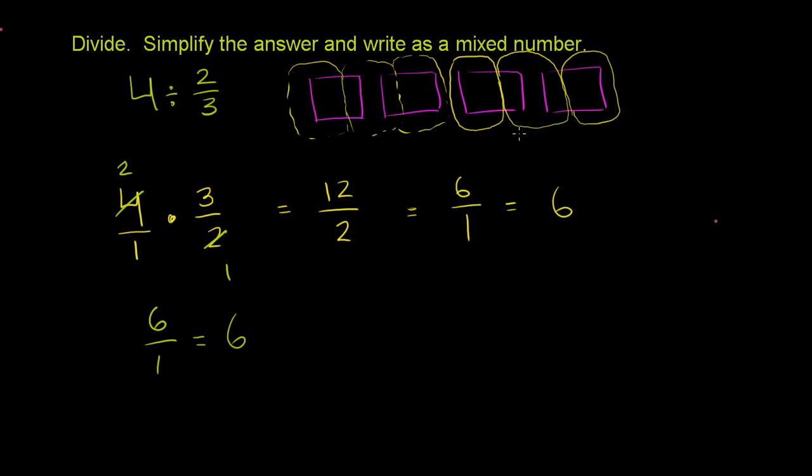Now, how many groups of 2 thirds do we have? We have 1, 2, 3, 4, 5, 6. So we have 6. 4 can be divided into 6 groups of 2 thirds. So it's just like regular division, sometimes a little harder to visualize because we're dealing with fractions.